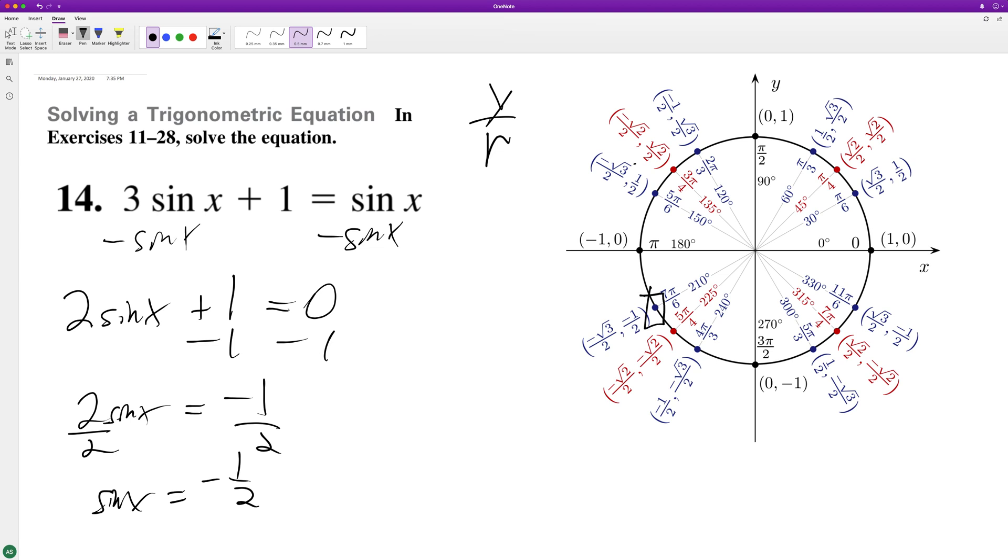So it looks like at 7 pi over 6. So right here. And then it looks like at 11 pi over 6.